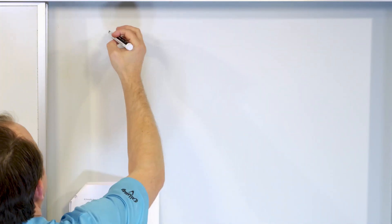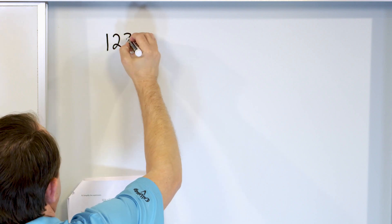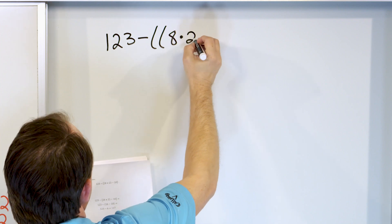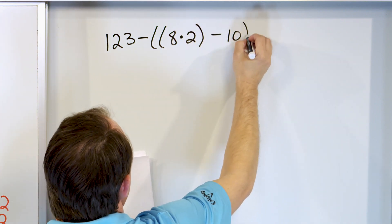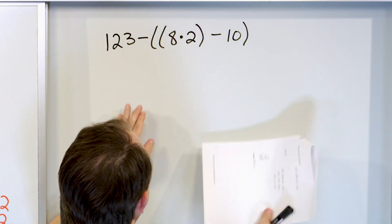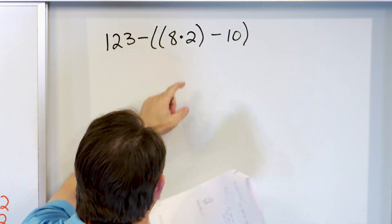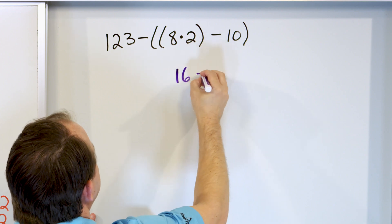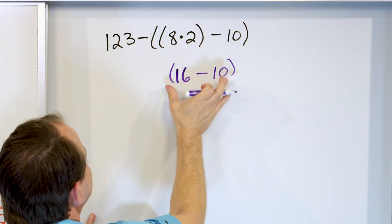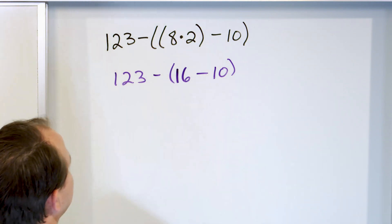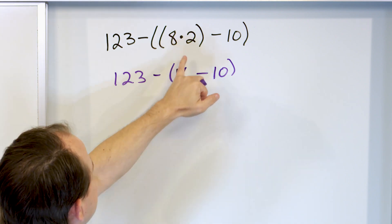Just a couple more problems and we are done. Let's take a look at 123 minus, open parentheses, open another parentheses, 8 times 2, close, minus 10, close. We ignore everything except the parentheses. Inside the outer set we have another set, so we do 8 times 2 first. 8 times 2 is 16. Then we still have to subtract 10, and all of that is still wrapped in the outer parentheses, with 123 minus whatever is still there.